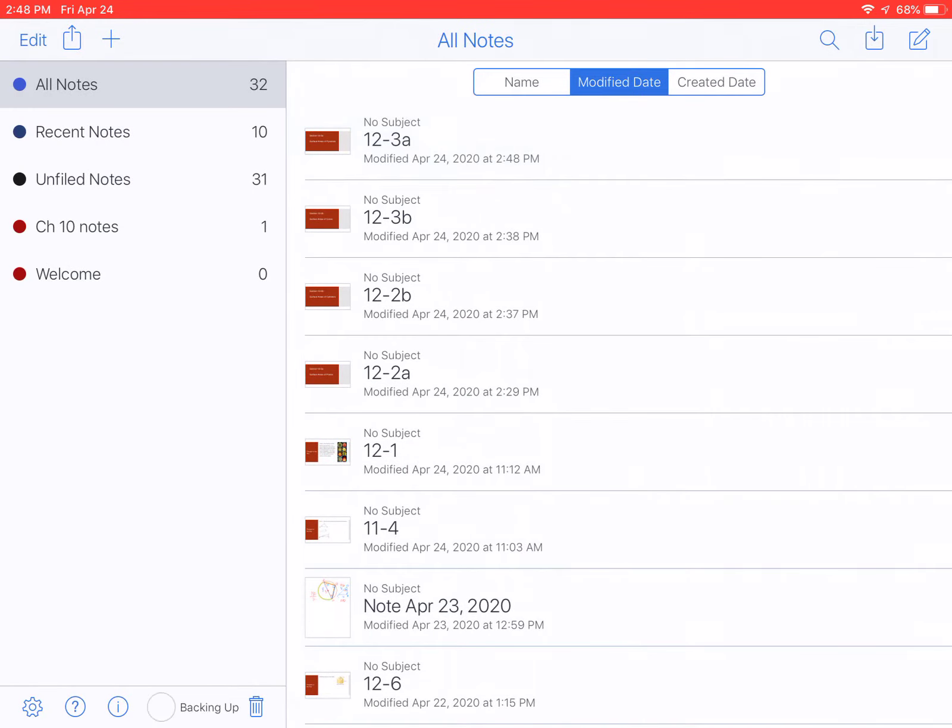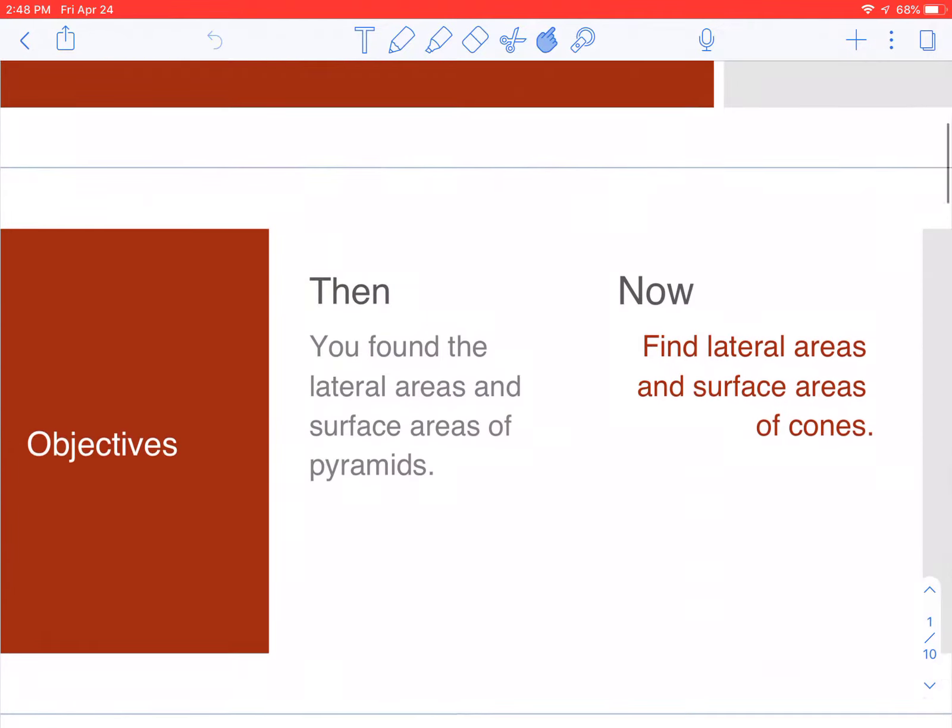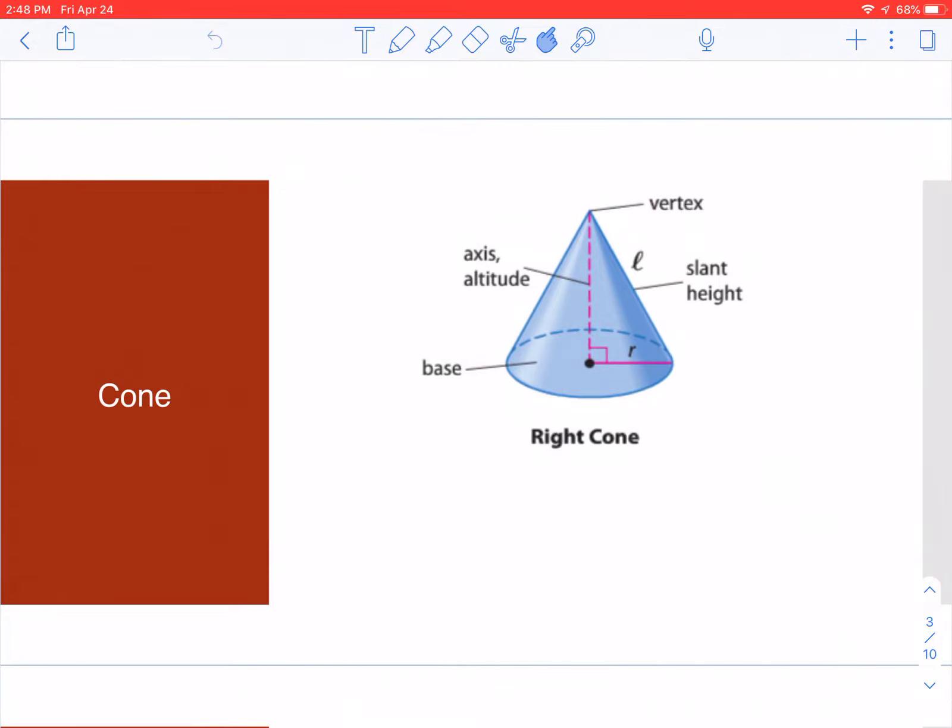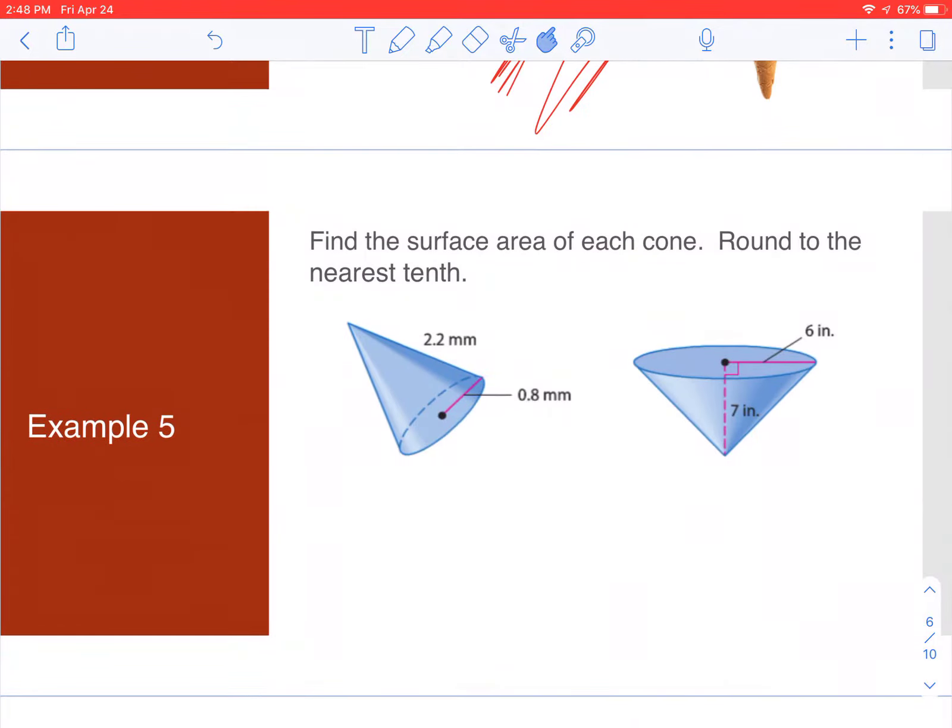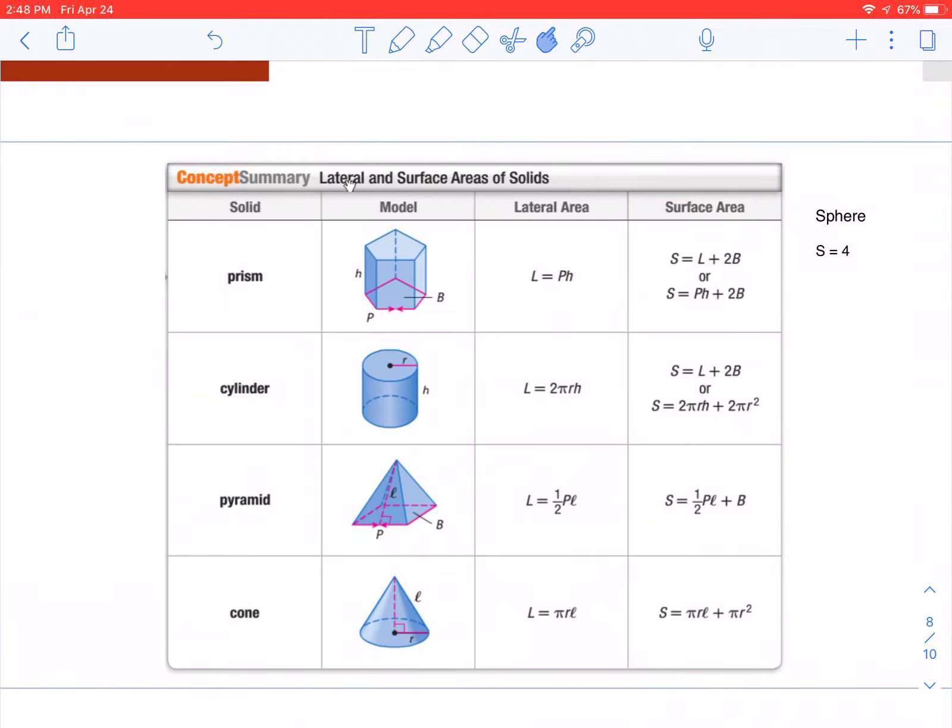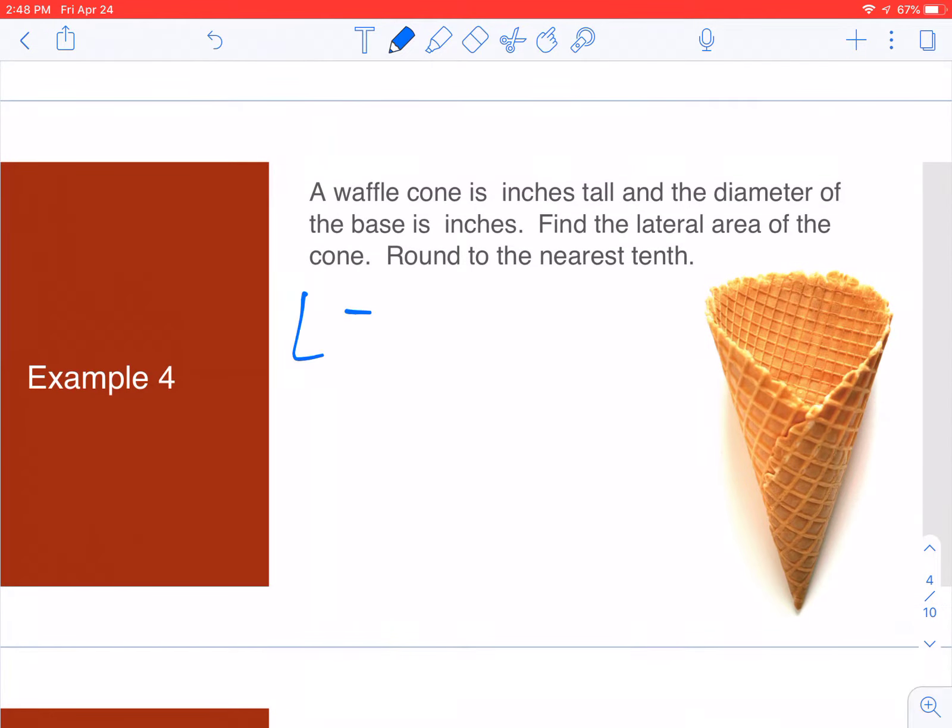Now we're moving to section 12-3-B, surface area of cones. We have slant height as L, radius, one base, and height or altitude. The lateral area is pi r L, and the surface area is pi r L plus pi r squared since we only have one circle.